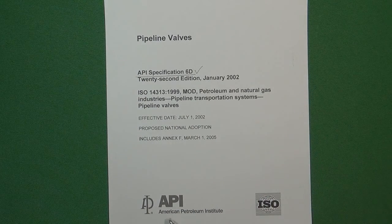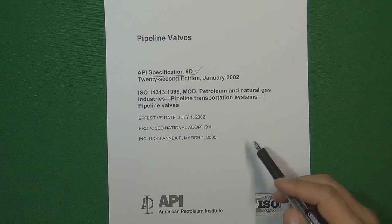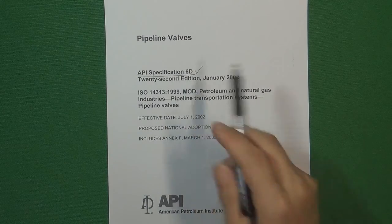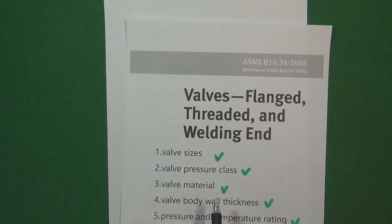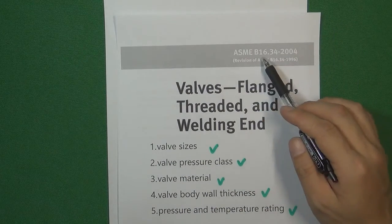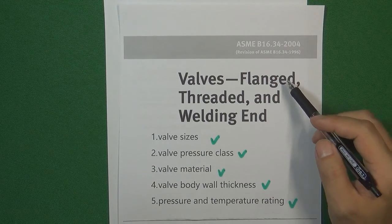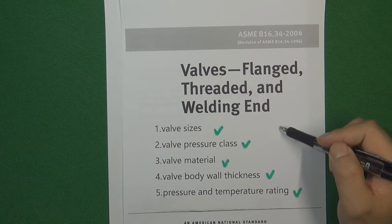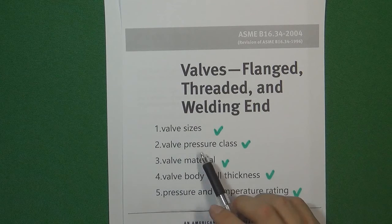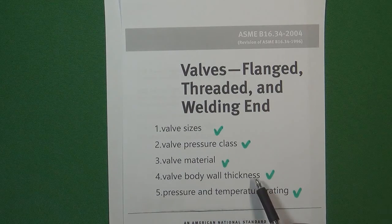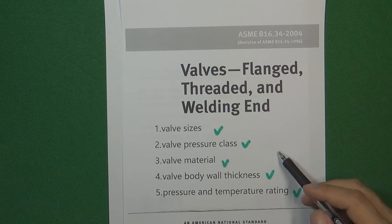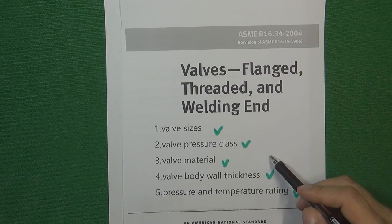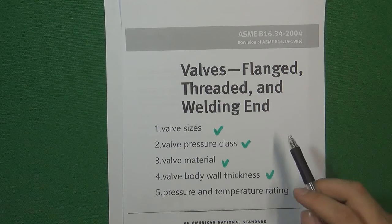API means American Petroleum Institute. So what is the difference between API 6D and ASME B16.34? ASME B16.34 is the foundation standard in the valve industry. You can find a lot of very basic design factors in this standard, like valve size, valve pressure class, valve material, valve body wall thickness, and pressure and temperature rating.